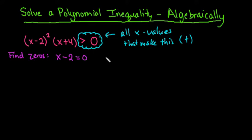Either x minus 2 has to equal zero or x plus 4 equals zero. So our zeros are at x equals 2 and x equals negative 4. It cannot equal these values because we're just looking for the values that are greater than zero, not equal to.